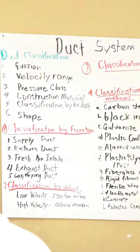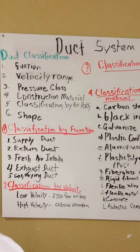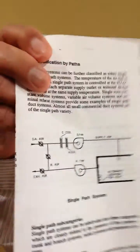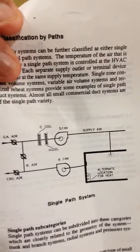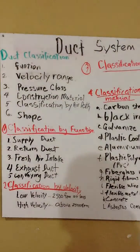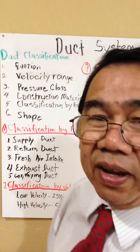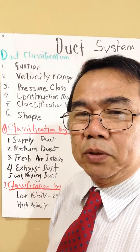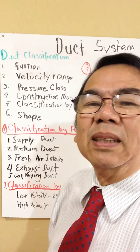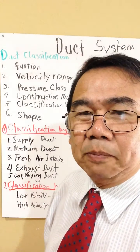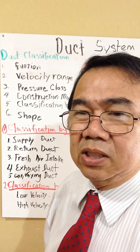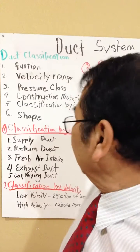As we see here in the basic diagram, we have a simple diagram of a system. The supply duct is the duct connected to the supply fan. The supply fan will push the air at velocity, and this duct will carry it and supply it to the inside of the space or to the space where it is required and used.